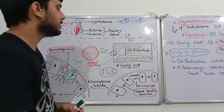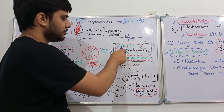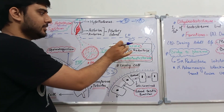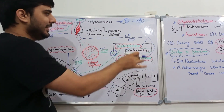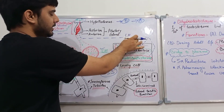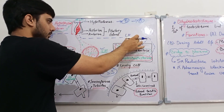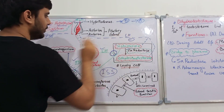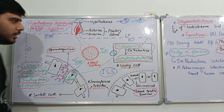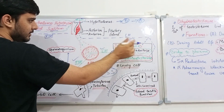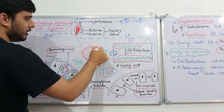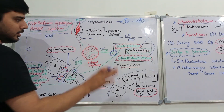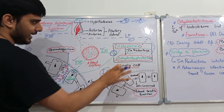You should also know that when the levels of testosterone and dihydrotestosterone become high, they send a negative feedback inhibition to the anterior pituitary and cause inhibition of the secretion of the luteinizing hormone. So we have completed the study of Leydig cells and their secretions.